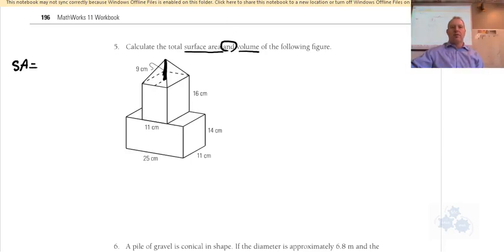So for this question number five we're looking for surface area and we're looking for volume, so let's do surface area first. Now we have all sorts of pieces, if you want to draw a net you can.